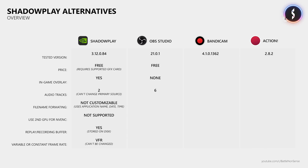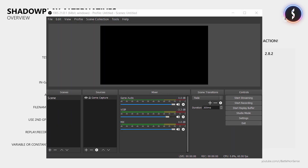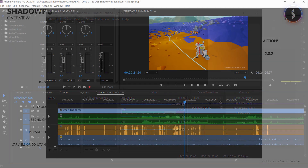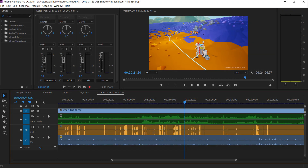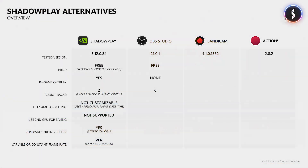Recordings can have up to 6 audio tracks, which is great as you can then have one track for the audio of the game, another one for your VoIP software like TeamSpeak or Discord, and another one for your microphone. This helps when you edit the video as you have full control over these separate audio sources. The filenames of the recordings can be customized, but unlike Shadowplay, OBS is sadly unable to use the name of the game for the filename, which makes it a bit harder to organize your recordings.